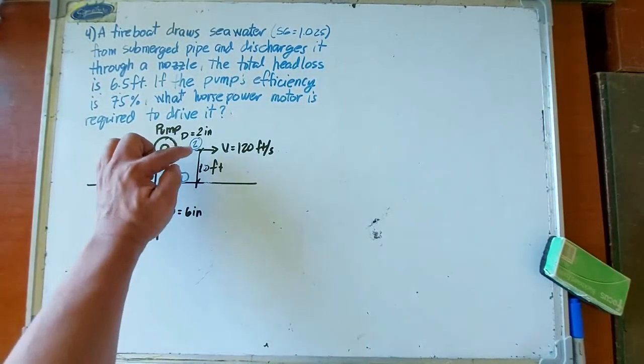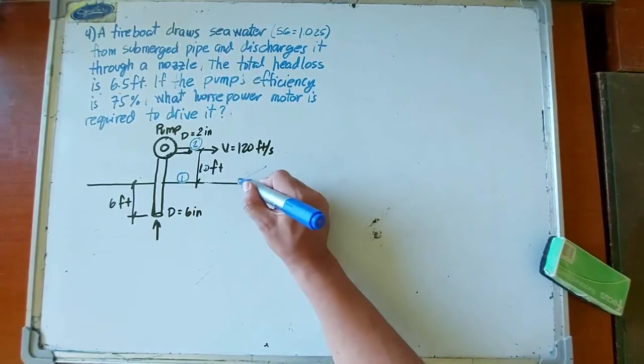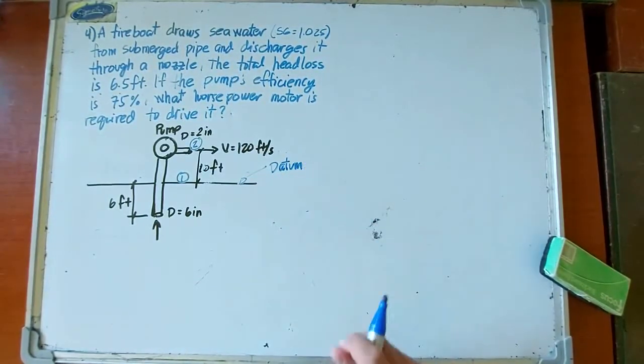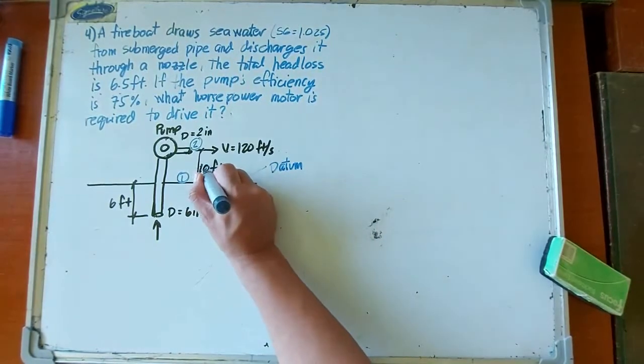Point one is here, and point two is at the exit point at the nozzle. We know the velocity, given as 120 feet per second. We also know the pressure is atmospheric pressure. And we can compute the elevation once we designate a datum. Since there's no designated datum for this particular problem, we can choose any point. Let's designate the seawater surface as our datum or reference point, so the elevation at point one is zero, and the elevation of point two from our datum is 10 feet.